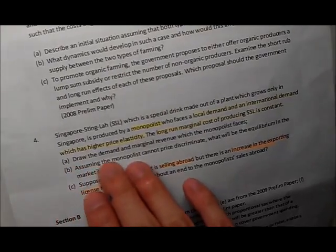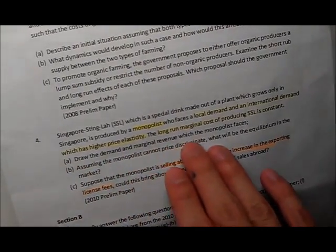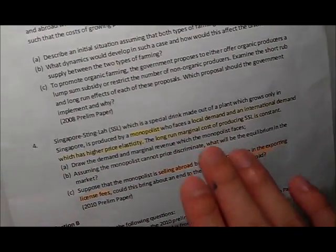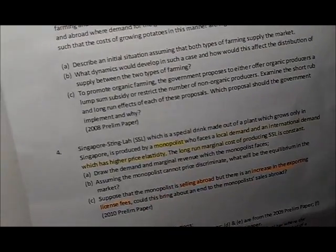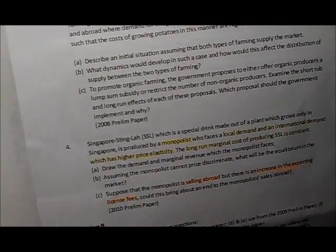The long-run marginal cost of producing this thing is constant. Part 1, draw the demand and marginal revenue which the monopolist faces. We'll just stick with this one first and if we have got time, we'll go to part B.